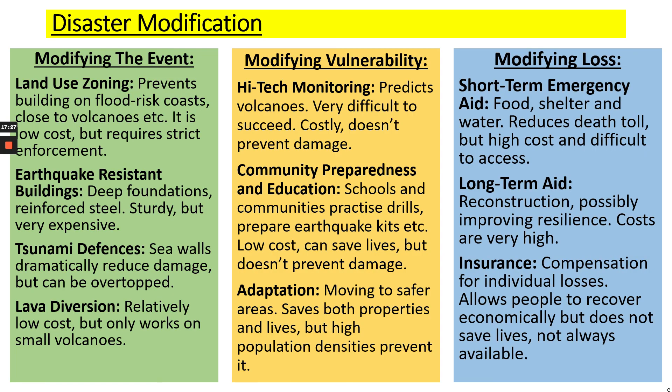Modifying the loss involves the real responses to an earthquake, tsunami or volcano. Short-term aid — food, shelter, water — reduces death tolls and keeps people alive, but it is high cost and relies on other governments from around the world to pitch in and help. Long-term aid involves reconstructing and improving resilience, but that is also very costly. Insurance means actually paying people for their losses, helping them to recover economically and get their businesses back up and running. However, insurance does not always save lives and is not always available.